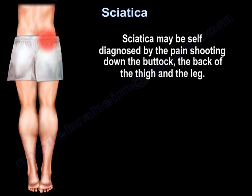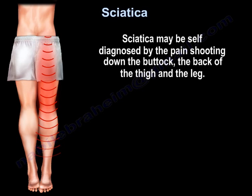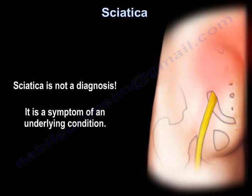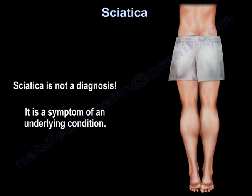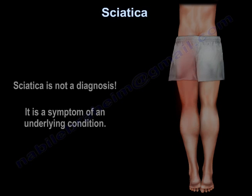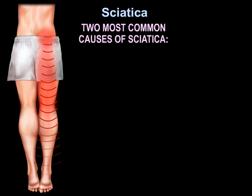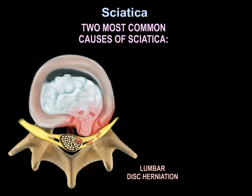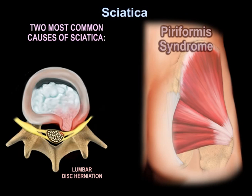Sciatica may be self-diagnosed by the pain shooting down the buttock, the back of the thigh, and leg. Sciatica is not a diagnosis — it is a symptom of an underlying condition. The two most common causes of sciatica are lumbar disc herniation and piriformis syndrome.